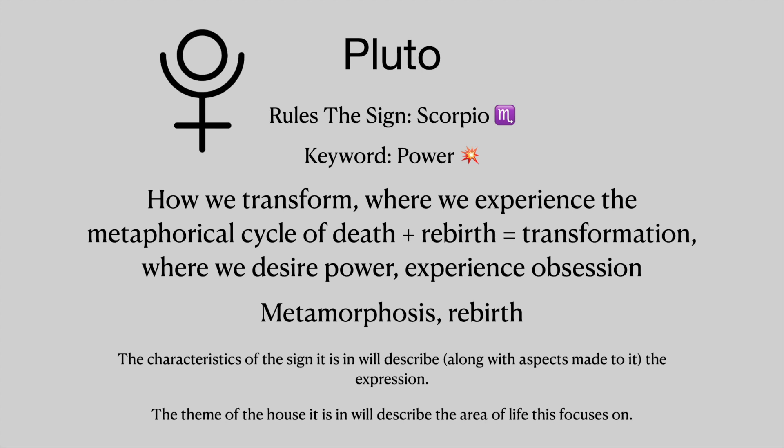And Pluto — this rules the sign of Scorpio and the keyword is power. This describes how we transform, where we experience a metaphorical cycle of death and rebirth that leads to transformation, where we desire power and experience obsession. This describes metamorphosis and rebirth within this lifetime. The characteristics of the sign it is in will describe, along with aspects made to it, the expression, and the theme of the house it is in will describe the area of life this focuses on.